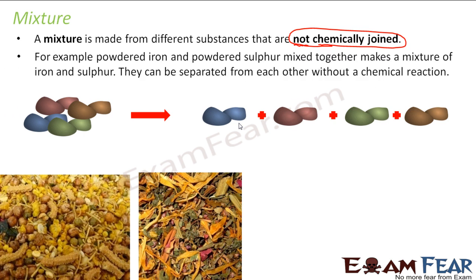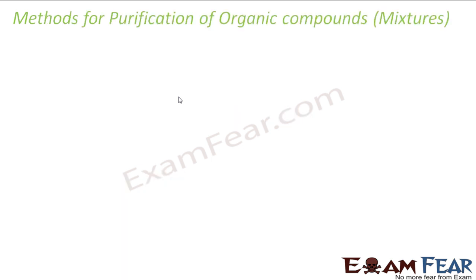One more example: iron and sulfur powder mixed together. They can be separated without a chemical reaction — you can take iron, take sulfur, mix them, and then separate them without a chemical reaction. That is a mixture.